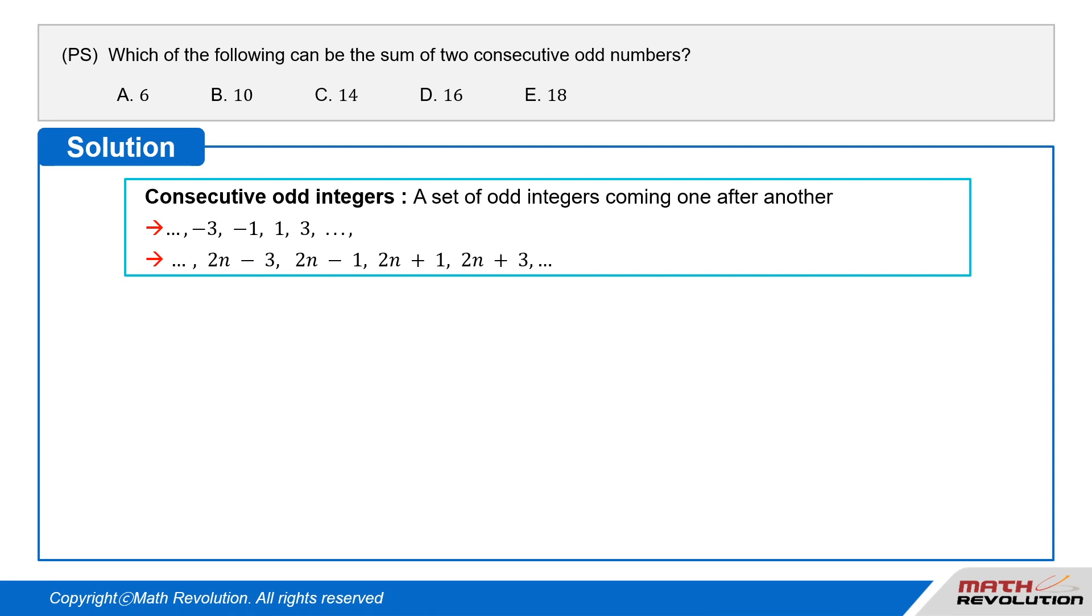negative 3, minus 1, 1, 3, and so on, or, and so on, 2 times n minus 3, 2 times n minus 1, 2 times n plus 1, 2 times n plus 3, and so on.